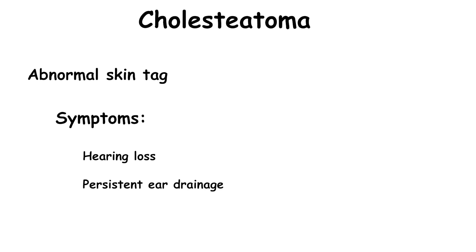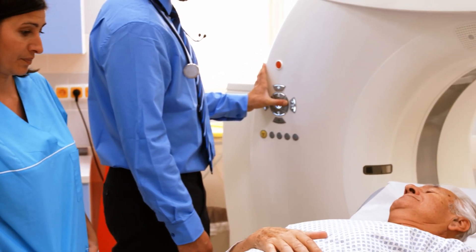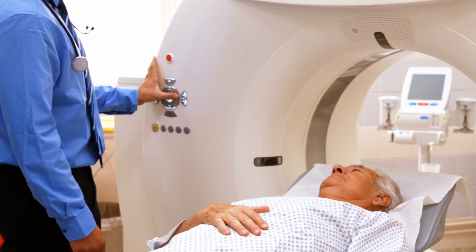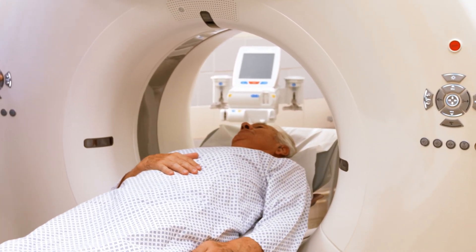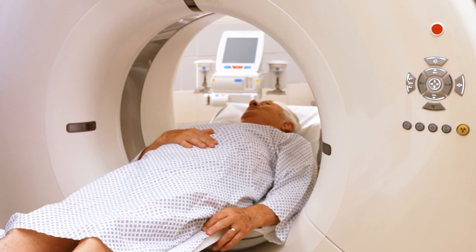Cholesteatoma is an abnormal skin growth behind the eardrum that often happens due to repeated infections or eustachian tube dysfunction. Hearing loss and persistent ear drainage are common symptoms, and if the inner ear is affected, the patient might experience dizziness or vertigo. Sometimes the doctor may perform a CT scan to assess the extent of the growth. The treatment of choice is surgical removal to prevent further hearing loss and even facial nerve damage.